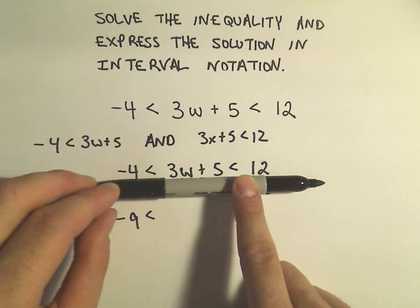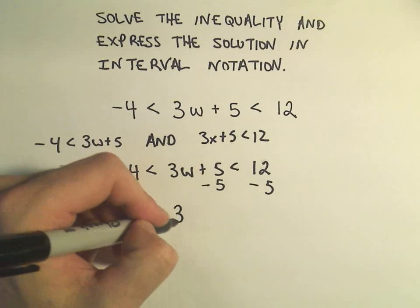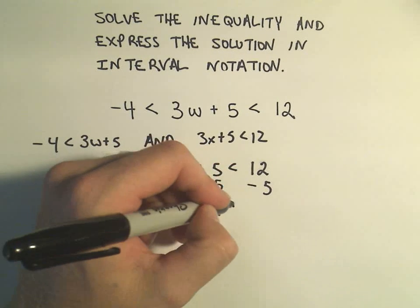So to me it says just subtract 5 from everybody. So on the left, we'll have -9. We'll be left with 3w in the middle. Let's see, 12 minus 5 would be 7.